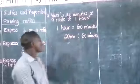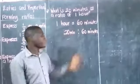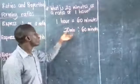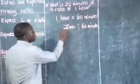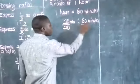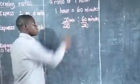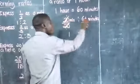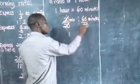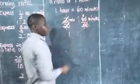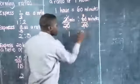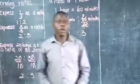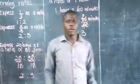We have 20 minutes to 60 minutes, where 60 minutes represents one hour. We look for a common number to divide both to the lowest terms. Both 20 and 60 can be divided by 20. Dividing 20 by 20 gives 1, and dividing 60 by 20 gives 3. So 20 minutes as a ratio of one hour is 1 to 3.